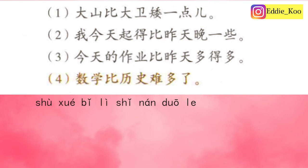Sentence four, 第四句: 数学比历史难多了. Math is much more difficult than history. Let's break it down: 数学 means math, 比 means to compare and is the keyword, 历史 means history, 难 means difficult, hard, or tough, and 多了 together means a lot or much, so 难多了 means a lot harder or much more difficult. We could also replace 多了 with 得多, giving 数学比历史难得多 — which means the exact same thing.